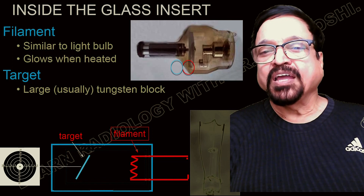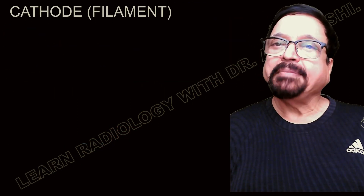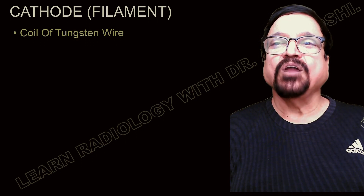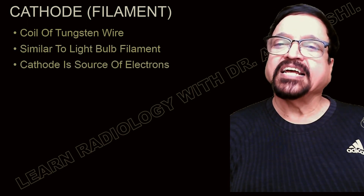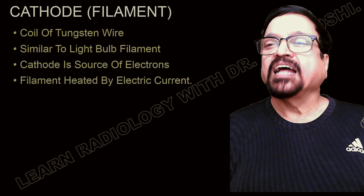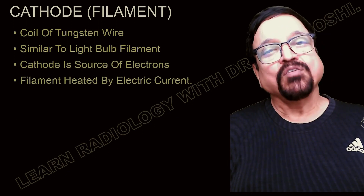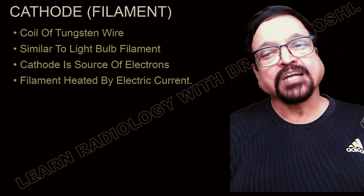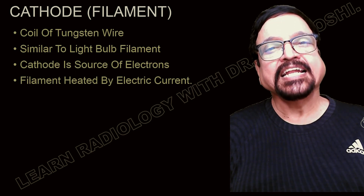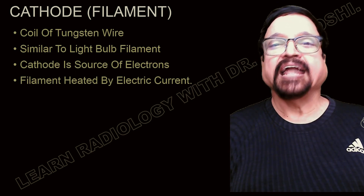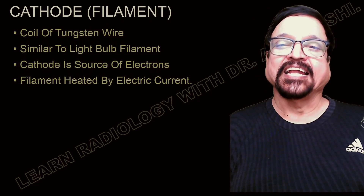Here we have illustrated the filament and the target. The filament is called the cathode. It is a coil of tungsten, similar to that of a light bulb, and is a source of electrons. Because of thermionic emission there is a boiling of electrons which come out due to heat. Electricity produces heat, electrons are boiled out, and they produce an electron cloud which is then accelerated.